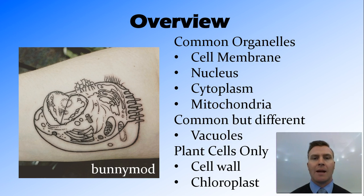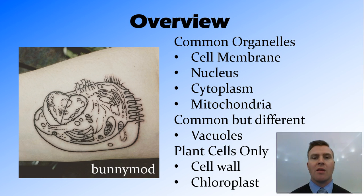In this video we've looked at plant and animal cells, and in particular the organelles — the little organs — inside these cells. We covered the ones common to both: the cell membrane holding the contents together, the nucleus providing genetic instructions, the cytoplasm filling the space not taken by other organelles, and the mitochondria as the powerhouse of the cell. We also covered vacuoles, found in both but large and few in plant cells versus many small ones in animal cells, as well as plant-only organelles: the cell wall giving structure and rigidity, and the chloroplasts where photosynthesis occurs.